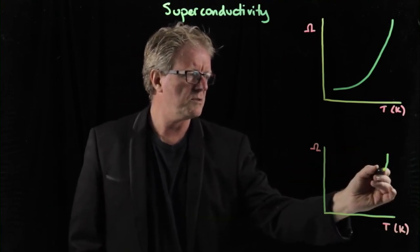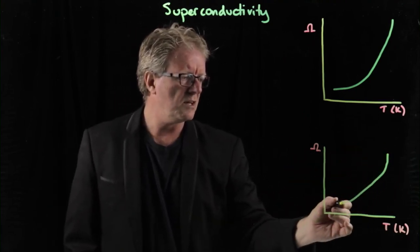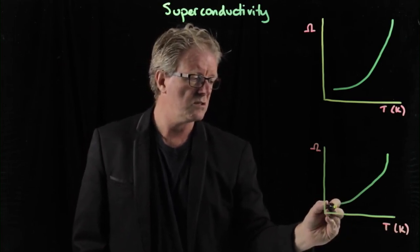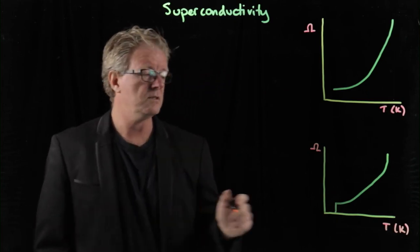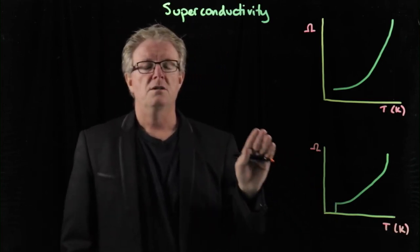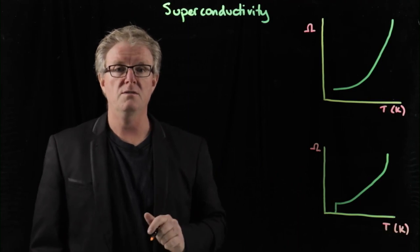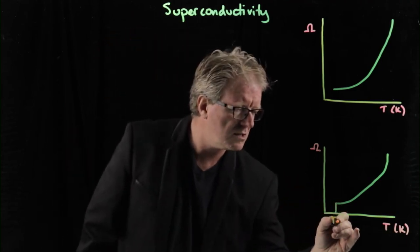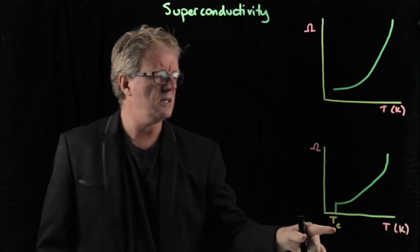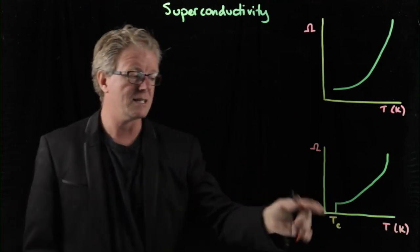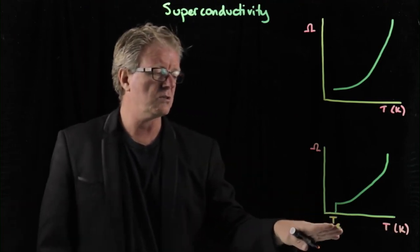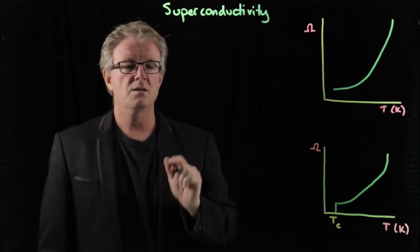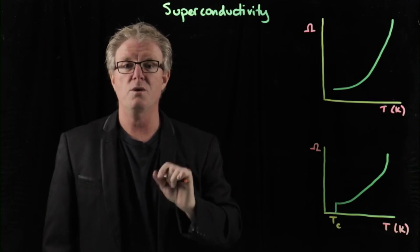If we draw the same sort of graph, but then all of a sudden there will be a specific temperature at which its resistance drops to zero. When that happens, the material shows the property of superconductivity. And this temperature is known as the critical temperature, T sub C.